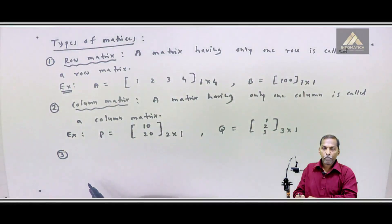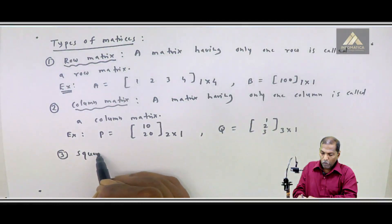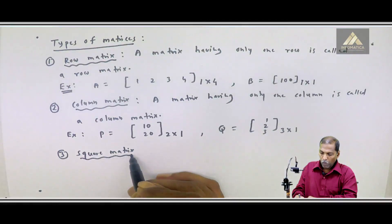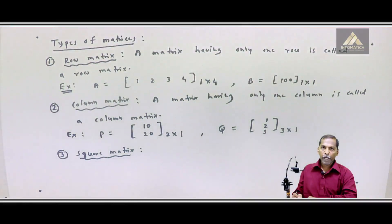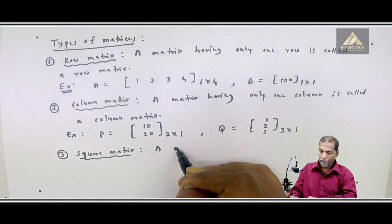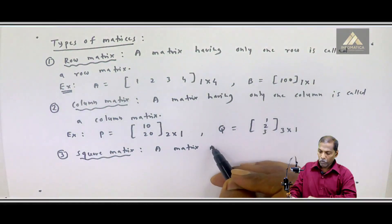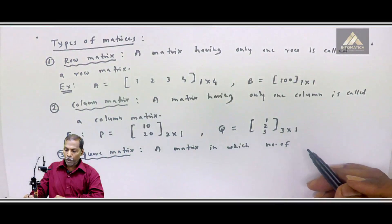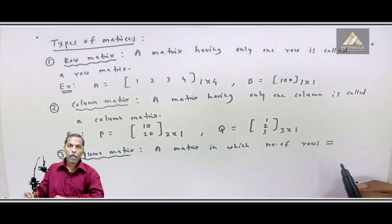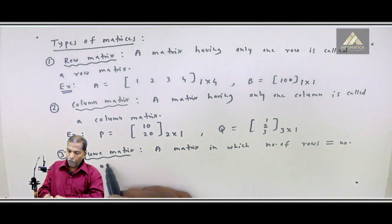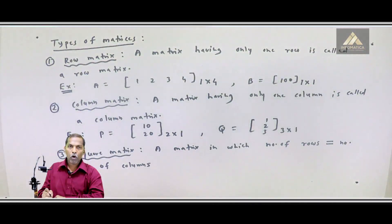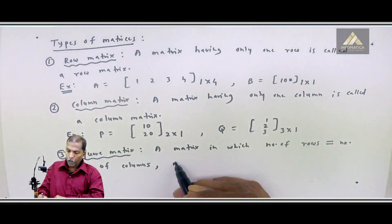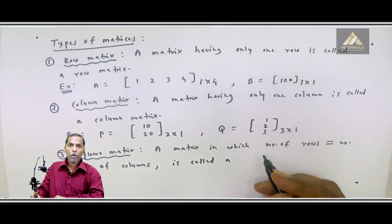Type number 3: Square Matrix. A square matrix is important that number of rows is equal to number of columns. A matrix in which number of rows is equal to number of columns is called a square matrix.